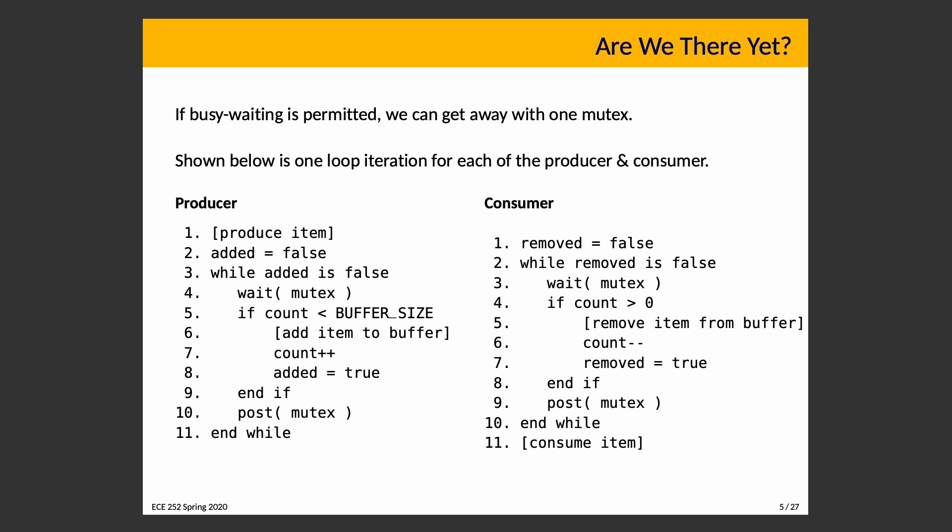The producer produces an item — imagine generating a random number — then sets added to false. While added is false, it waits on the mutex. If count is less than the maximum size, it adds the item to the buffer, increments count, sets added to true, and that breaks out of the while loop, posting on mutex. For the consumer: set removed to false, and while removed is false, wait on the mutex. If count is greater than zero, take an item out of the buffer, decrement count, set removed to true, post on the mutex, exit the loop, and then consume the item.